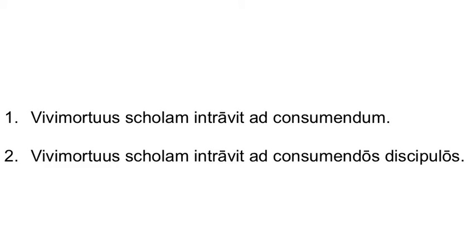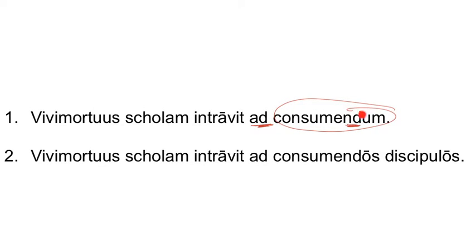Let's take a peek at our first sentence: Vivi Mortui scholam intrat ad consummendam. The zombie entered the school. Ad plus an nd-form always means purpose. For the purpose of doing what? For the purpose of eating. So this nd-word here is a gerund — acting as the direct object of our preposition ad. Ad takes a noun object, which makes sense: for the purpose of eating.